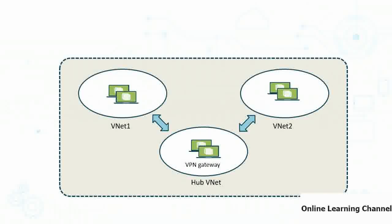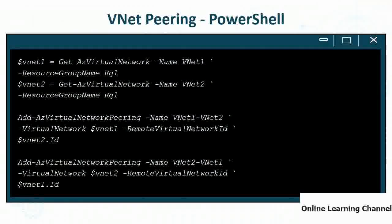You can also link VNets indirectly to a centralized hub VNet in a hub-and-spoke topology. For example, a hub VNet with a VPN gateway allows remote connectivity via an encrypted VPN tunnel. With VNet peering from spoke VNets to the hub, once VPN connectivity is established into the hub, resources in all peered VNets become accessible.